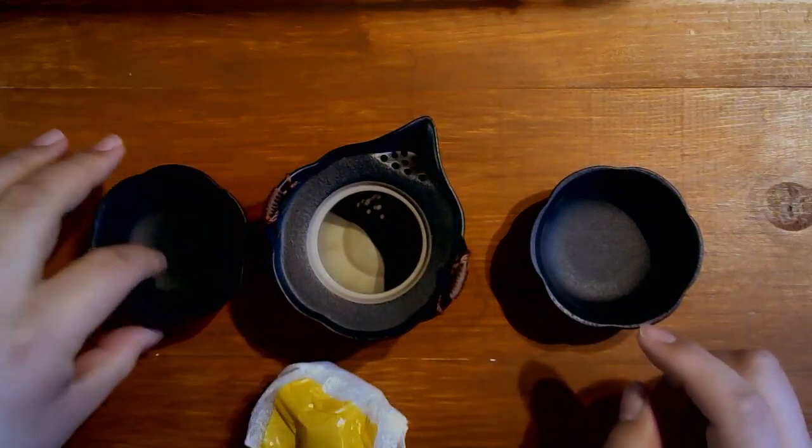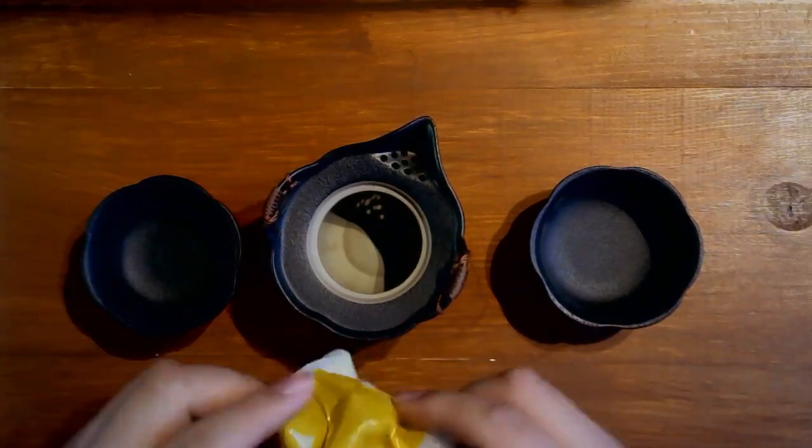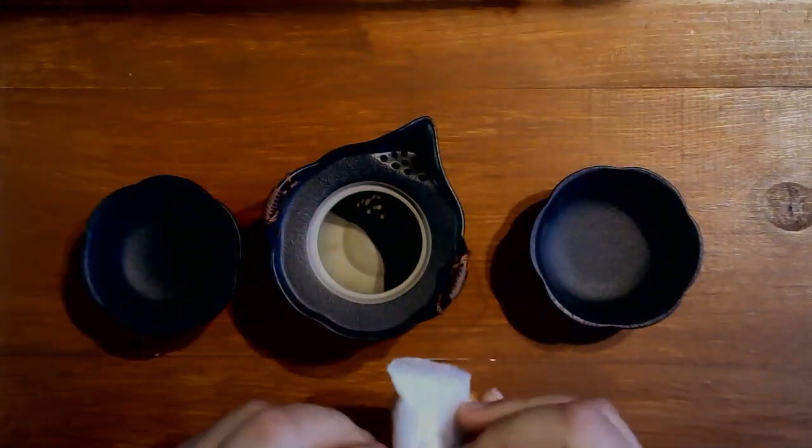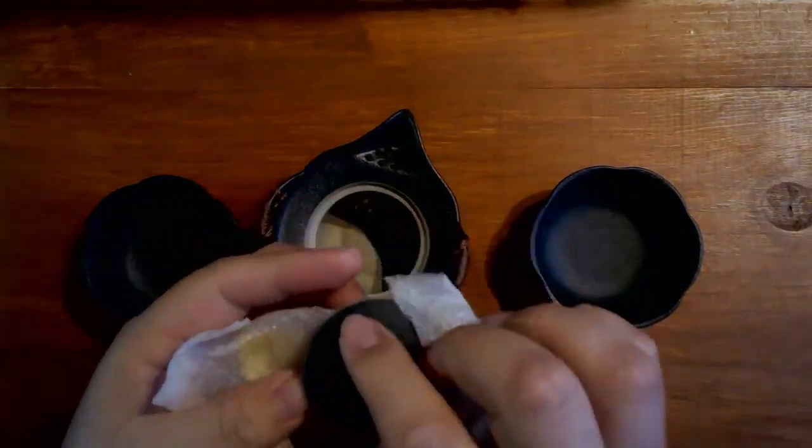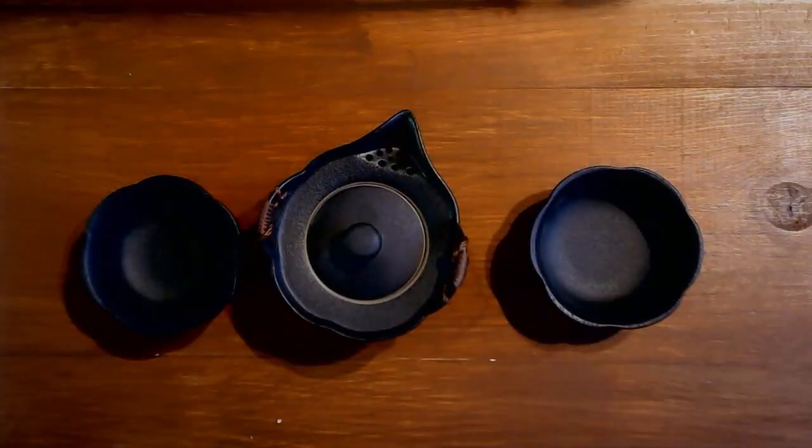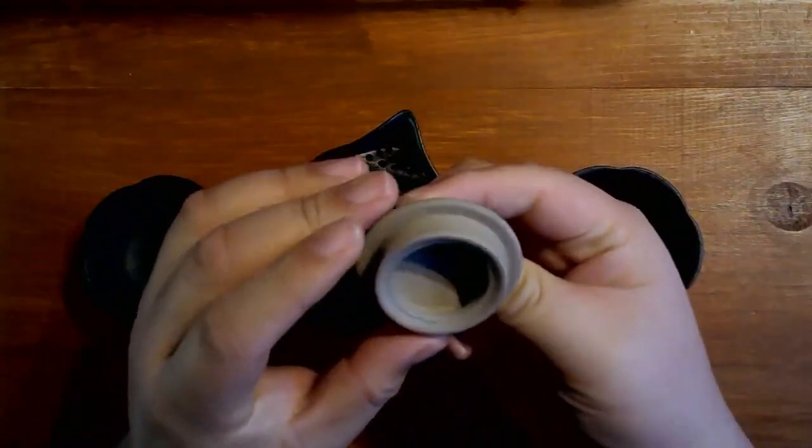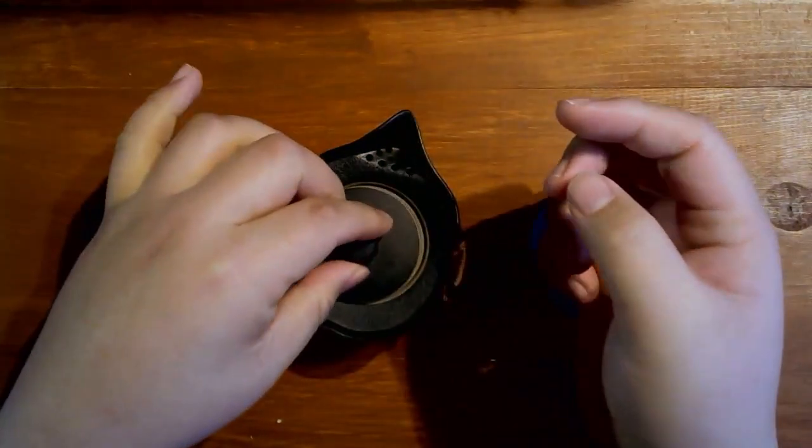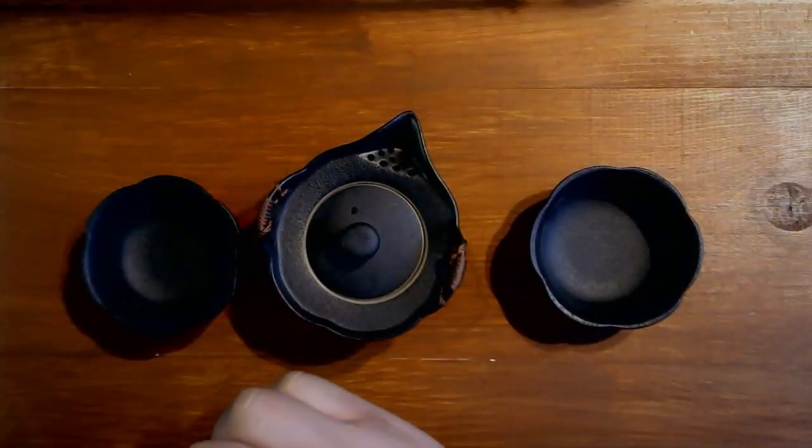It's still called a Gaiwan because you brew it in that style. You brew tea with it in that style. Let me take the little lid out. Okay, this is cute. And I can put it in there. There's a little hole on the top of the lid. Usually a Gaiwan doesn't have a hole on the top of the lid and it doesn't have a little built-in strainer.